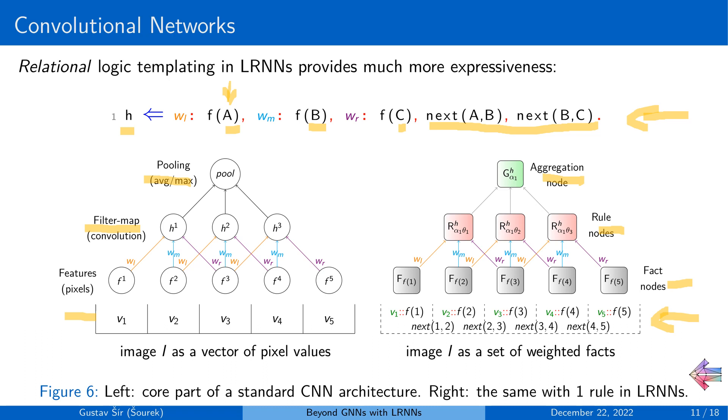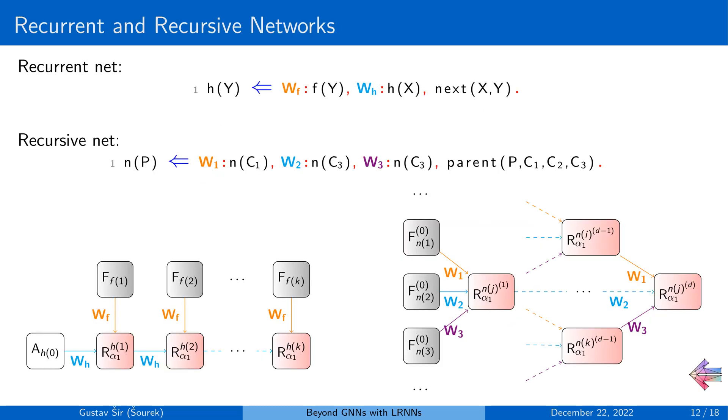Now this example might seem a little bit cumbersome as there are inherent assumptions about the structure of the pixel grids that are inherent in the CNNs, while here we have to make them explicit. But the principles come more naturally, for instance, for various recurrent and recursive neural models,